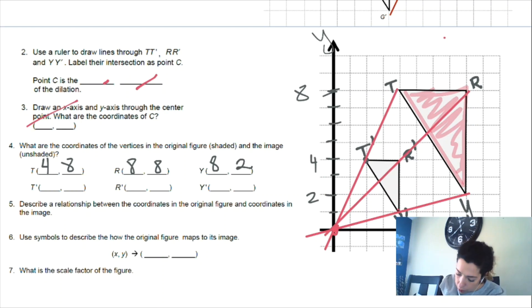And point Y is going to be 8, 2. So T prime is going to be 0, 2, positive 4. R prime is going to be 0, 4, 4. And then Y prime is going to be 4, 1.